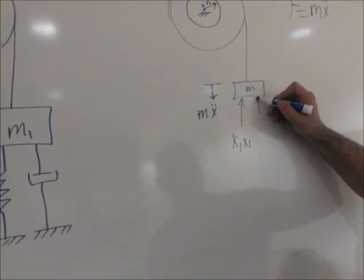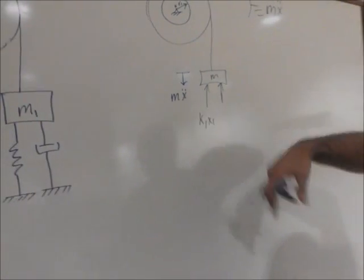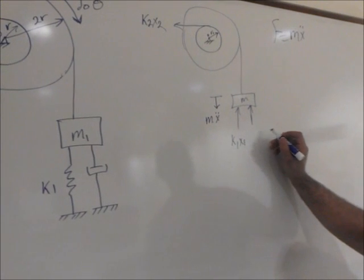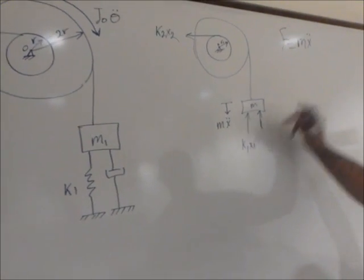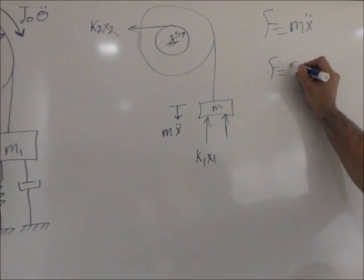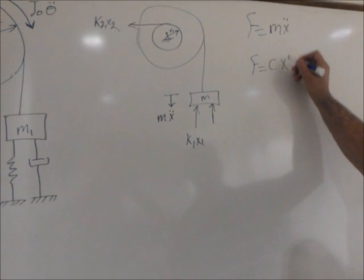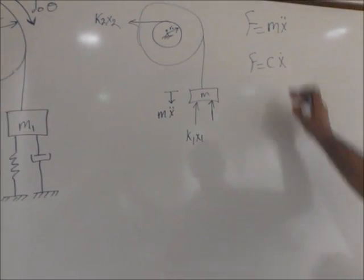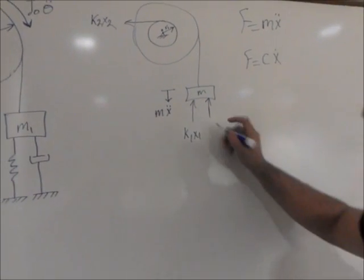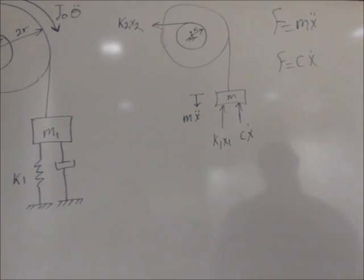And this is the damper. And the damper also opposes the direction that you're going with. In this case, for the damper, the force equals F equals C, which is the damping constant, and then the velocity. In this case, we'll call it X dot. Okay. That's the most important thing.